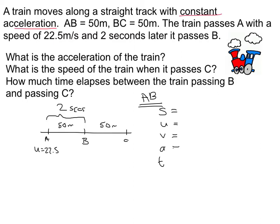A to B SUVAT. We want to know the acceleration, so I'll put that in straight away. I know that it is two seconds from A to B. I know that the displacement is 50 metres. The initial velocity is 22.5, and that's all we need.